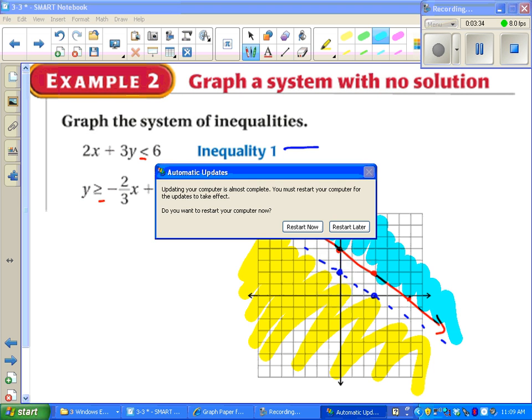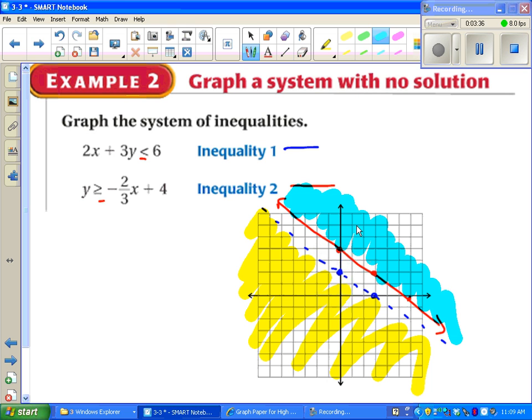That's because these two inequalities don't overlap at all. So you might have guessed it. The answer is no solution. That's something that can only happen when we have two lines that are parallel.